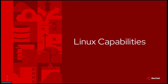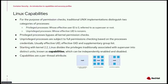What are Linux capabilities? Before jumping into what capabilities are, we need to understand that in Linux we have two types of processes: privileged processes, whose effective user ID is zero — also referred to as super user or root processes — and unprivileged processes, whose effective UID is non-zero. Unprivileged processes are subject to full permission checking based on the process credentials, usually effective UID, effective GID, and supplementary group list.